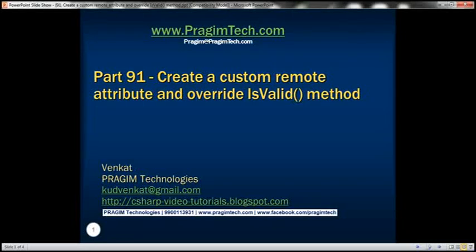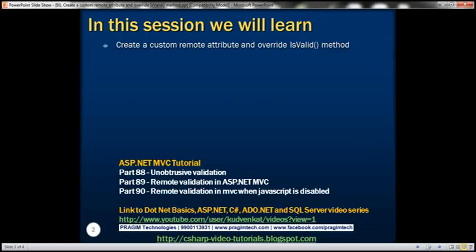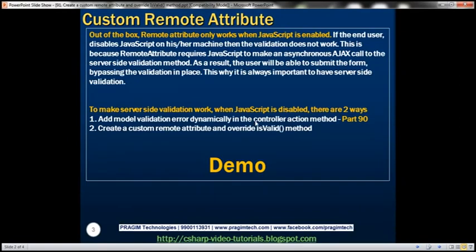This is part 91 of ASP.NET MVC tutorial. In this video, we'll discuss creating a custom remote attribute and overriding the IsValid method. This is a continuation of part 90, so please watch part 90 before proceeding.